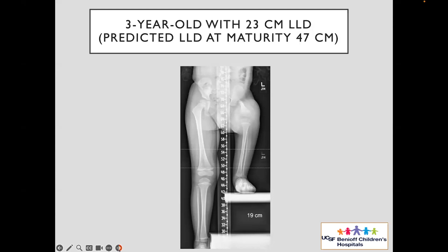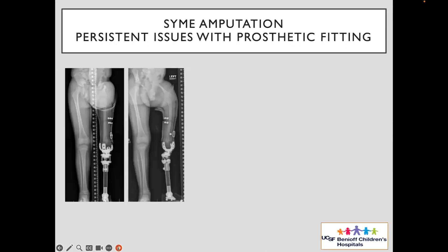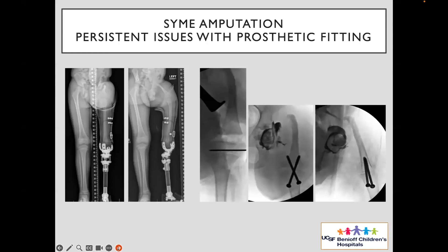Back to the psychosocial issue — the family didn't have the means or stamina to go through multiple lengthenings and reconstruction, and they'd sought multiple opinions. When I saw him, I actually sent him to talk to a couple of families and ended up — I hope others are not cringing — we did a Syme amputation as a first stage, realizing he may need something else done, such as a knee fusion and a hip procedure. I just wanted to get to know the family and see what they were going to do.